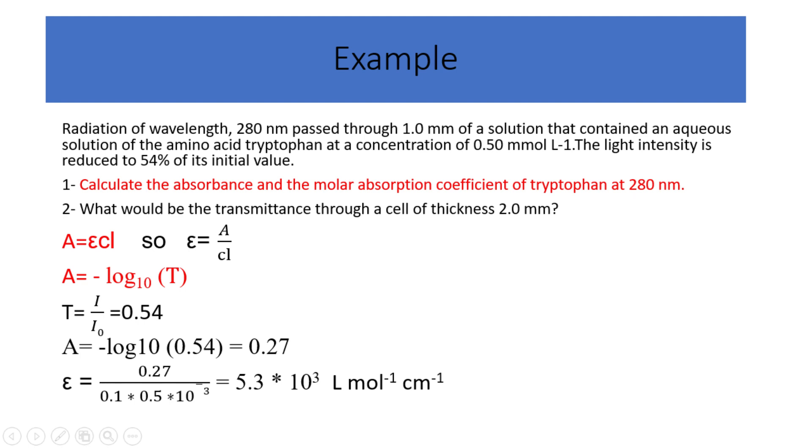Let us calculate the molar absorption coefficient by using the equation epsilon equals absorbance divided by C times L. Epsilon equals 0.27 divided by 0.1 times 0.5 times 10 to the power of negative 3, and its value is 5.3 times 10 to the power of 3.